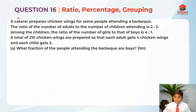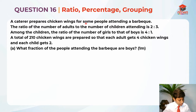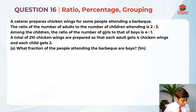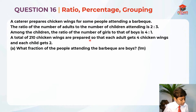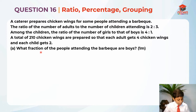This question is testing us on ratio, percentage and grouping. A caterer prepares chicken wings for some people attending a barbecue. The ratio of the number of adults to the number of children attending is 2 is to 3. Among the children, the ratio of the number of girls to that of the boys is 4 is to 1. A total of 210 chicken wings are prepared so that each adult gets 4 chicken wings and each child gets 2. What fraction of the people attending the barbecue are boys?